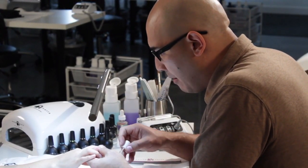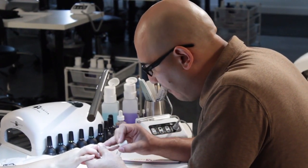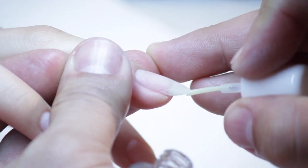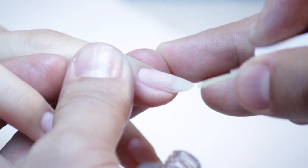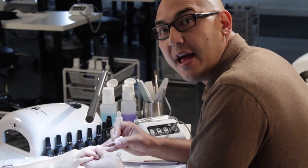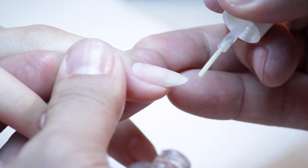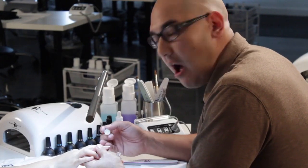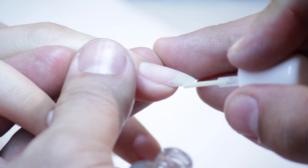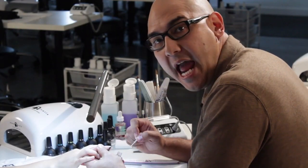Remember, when applying protein bond, apply it to the very edge of the tip. Do not coat the whole entire free edge with protein bond—it's going to make it harder to remove the product during soak off. You want to only get the very edge of the nail.